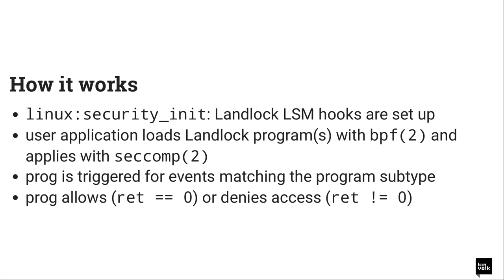The idea behind the two-step approach is that in some scenarios, the application that loads the rule may not be the user application itself. One application could load the rule with BPF and then pass the program file descriptor over a socket to the user application, which then applies the rule with the second syscall. Once the program is loaded and applied, it gets triggered for all events matching the program subtype. The program can then return a code to signal whether the action should be allowed — return code zero to allow, non-zero to deny.